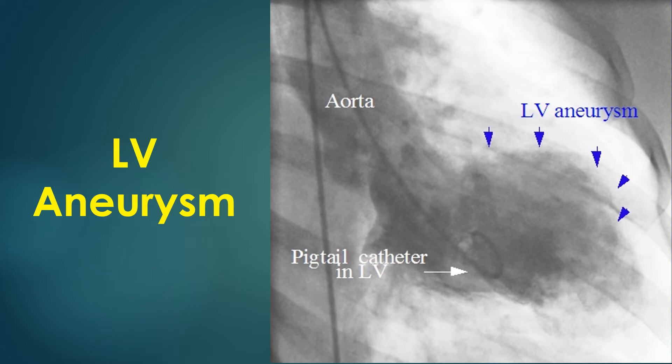Refractory heart failure may occur due to wasted systole — that is, a portion of the ventricular blood moves in and out of the aneurysm without being pumped out into the aorta.